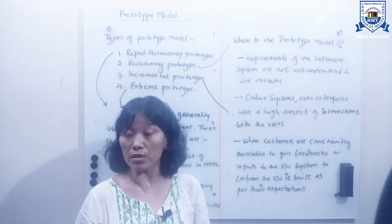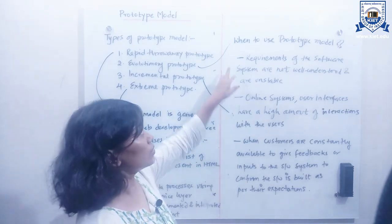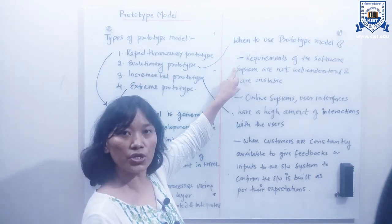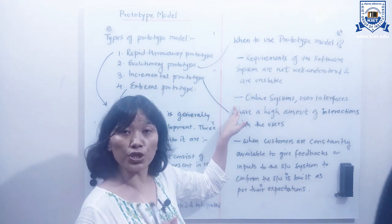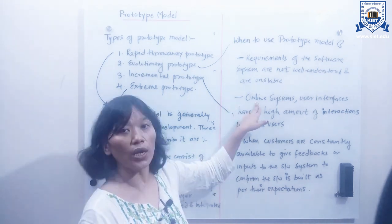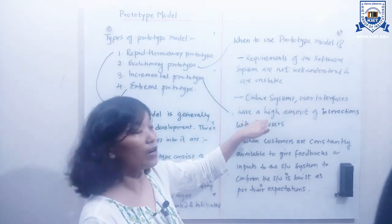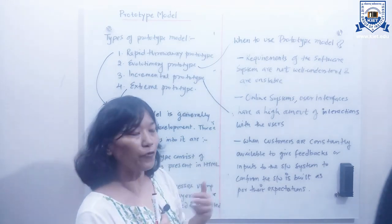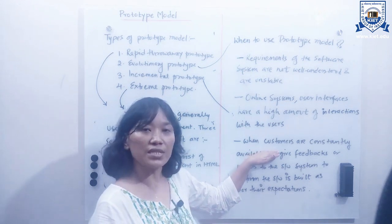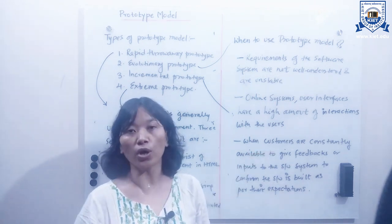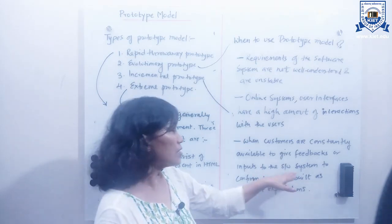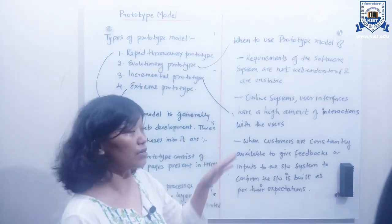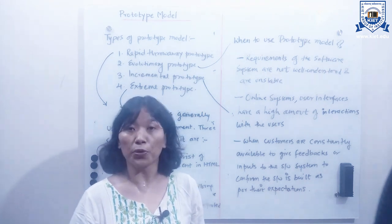There are three reasons to use the prototype model. First, when the requirements of the software system are not well understood and are unstable. Second, it is used for online systems because in online systems the user interface has a high amount of interaction with users and we continuously get feedback from them. Third, when customers are constantly available to give inputs or feedback to confirm the software is built as per their expectations.